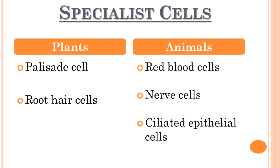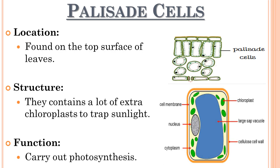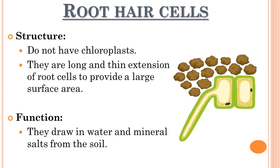Although all plant and animal cells have the same basic structures, many of them are adapted to carry out specialized tasks — we call them specialist cells. Plants have palisade cells and root hair cells, whereas animals contain red blood cells, nerve cells and ciliated epithelial cells. Palisade cells are plant specialist cells found on the top surface of leaves. They have a lot of chloroplasts to easily trap sunlight for photosynthesis. Root hair cells do not have chloroplasts, as they do not need chlorophyll for photosynthesis.